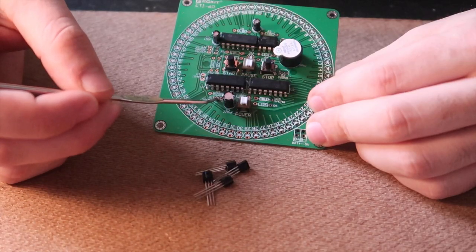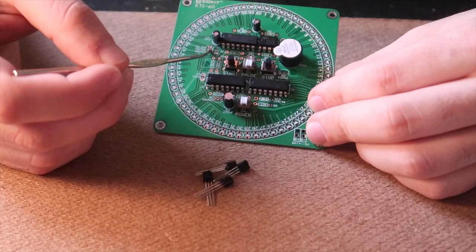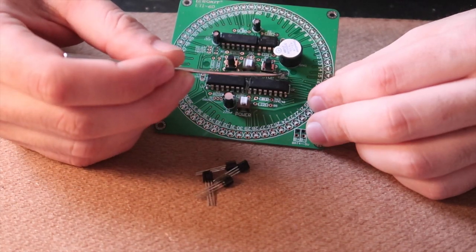Next the transistors, one of them is down here. Two of them are right next to each other here and the last one is just under the buzzer.